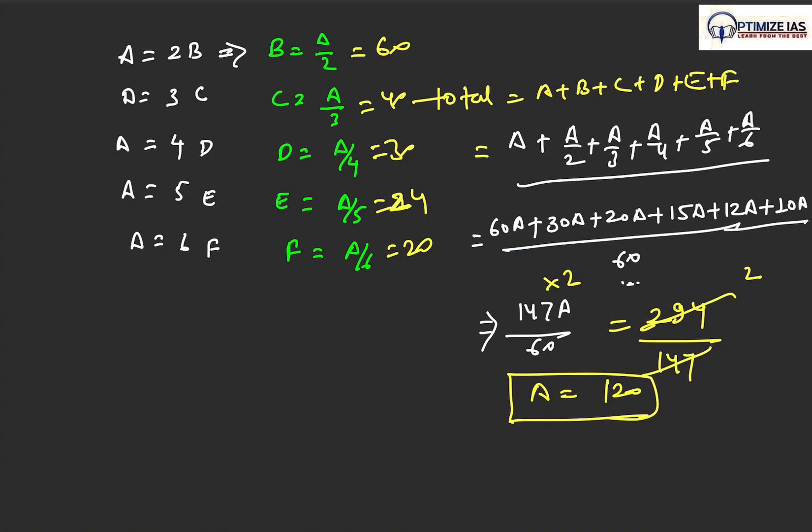Another way of doing this question is that here we have done till here, we have made the equation. Now what we will simply do, we will simply put the value of B, C, D, E, F. So value of B equals A by 2, then C equals A by 3, all this value we put and then we simply solve this equation.